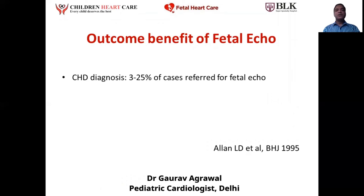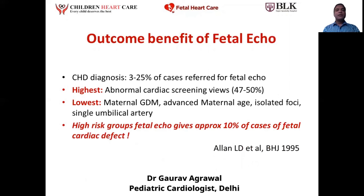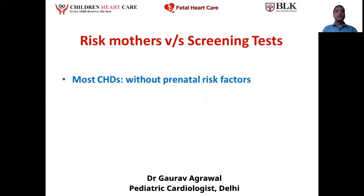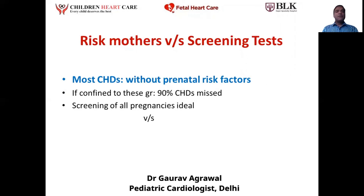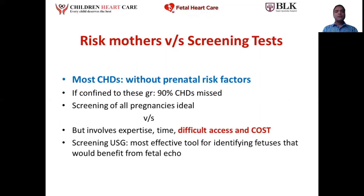By doing the fetal echo test, heart disease will not be found in every pregnancy. Congenital heart disease diagnosis is made in 3 to 25% of cases referred for fetal echo — highest when there is an abnormal cardiac ultrasound screening done by a radiologist, and lowest when the mother is diabetic, older, or has other indications. In the high-risk group with the indications listed, only about 10% of fetuses will have some form of heart disease, meaning 90% of fetuses without high-risk features will be missed if we focus only on high-risk cases. Ideally the fetal echo should be conducted in every pregnancy, but it requires expertise and involves cost. So we should conduct it in the indicated cases and also when the screening ultrasound shows some form of abnormality.